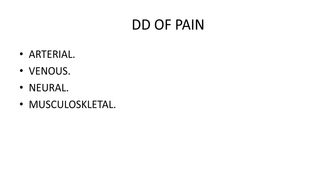Nervous pain is usually sharp, lancinating pain that respects the dermatomal distribution of the affected nerve, and the pulses are usually intact. Musculoskeletal pain is a dull, aching pain felt in the joints or limb, more in the morning and less in the afternoon. It is usually associated with musculoskeletal disorders like osteoarthritis, myalgia, and rheumatoid disease, and pulses are usually intact.